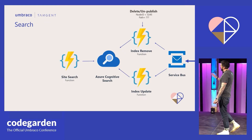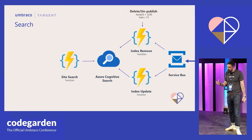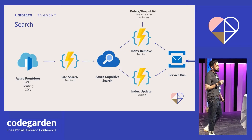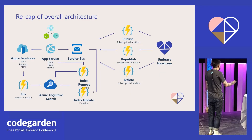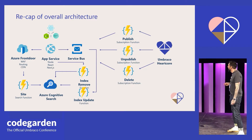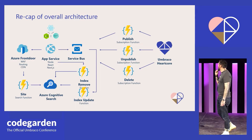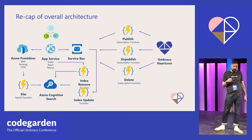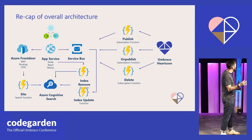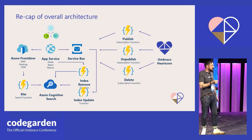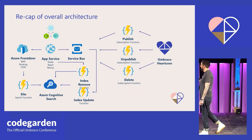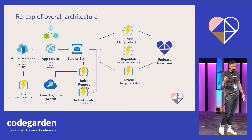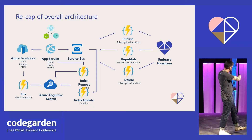We have a separate function for site search handling our fuzzy search via Azure CDN — Azure Front Door. So the full picture is: Heartcore at the core; three functions handling publish, unpublish, and delete; a service bus in the middle to control event order; an app service running Next doing all our pre-rendering, putting pre-rendered assets into Azure Front Door and our CDN; Azure Cognitive Search with functions to update and remove items from the index; and a separate function to handle site search as an async call from the client via Front Door.